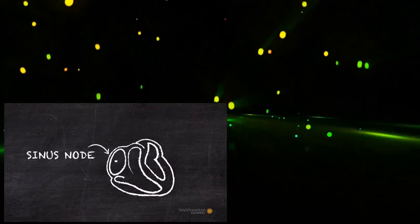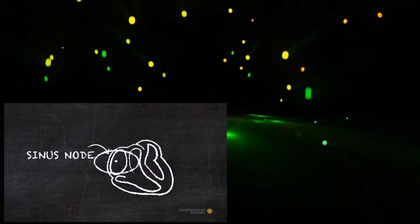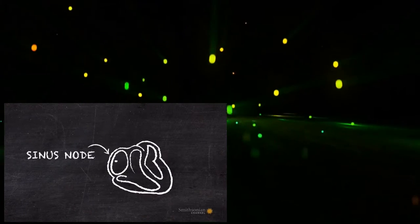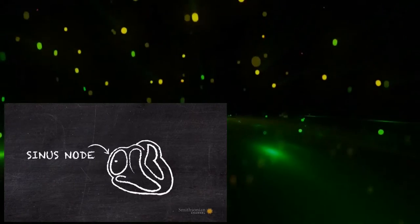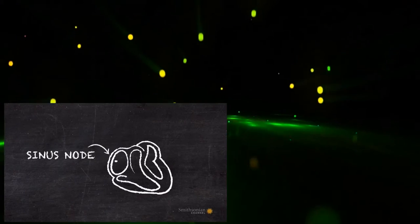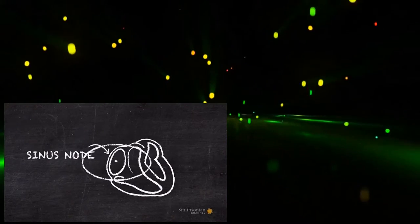In a normal heart, a cluster of cells called the sinus node, positioned in the right atrium, emits a regular electrical pulse, making the heart beat. Heart block occurs when these pulses are delayed or disrupted.